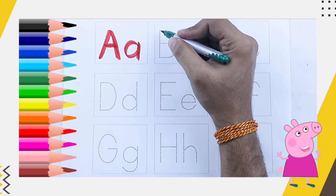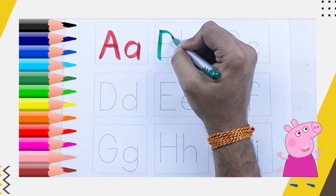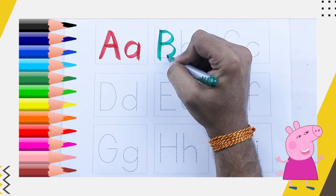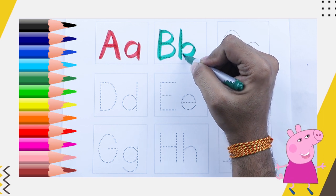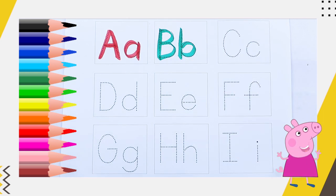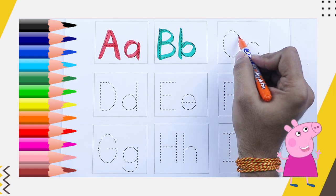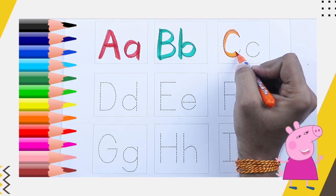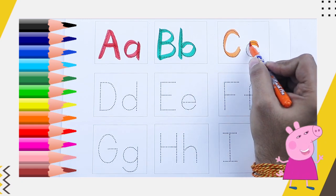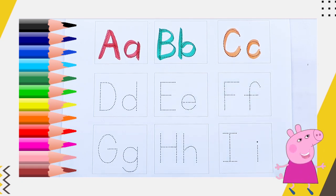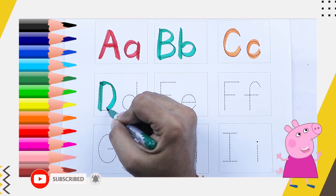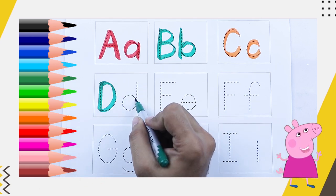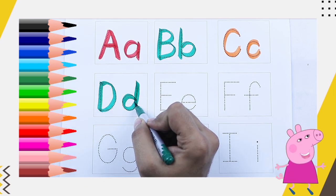Green color capital B, B for ball. Green color small b, b for ball. Orange color capital C, C for cat. Orange color small c, c for cat. Green color capital D, D for dog. Green color small d, d for dog.